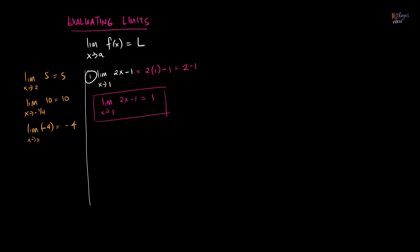Now if you want to evaluate the limit of x squared plus 2 as x approaches 0, just substitute 0 for every x in the function. That's 0 squared plus 2, so the final answer is: the limit of x squared plus 2 as x approaches 0 is equal to 2. As simple as that — just substitute 'a' for every x in the function.